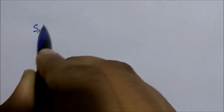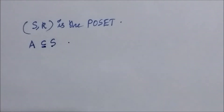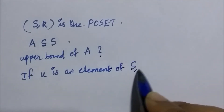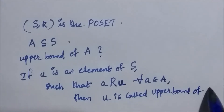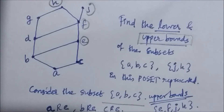We can now define what an upper bound is formally. When (S, R) is a partially ordered set and A is a subset of the poset, we say that u is an upper bound of the subset A if u is an element of S such that a is related to u for all a belonging to A. Hence e, f, j, and h are the upper bounds of the set {a, b, c}. Note that there can be more than one upper bound.